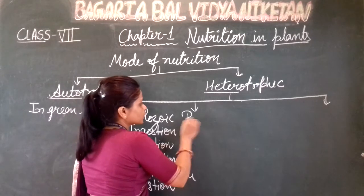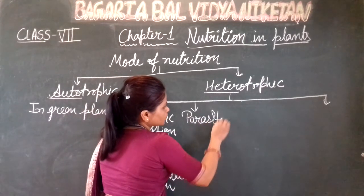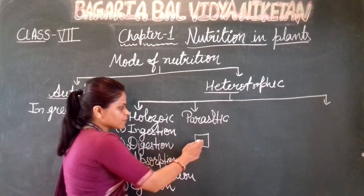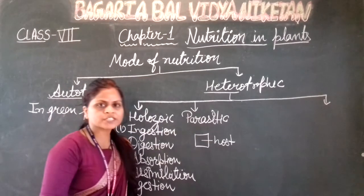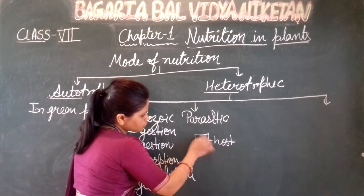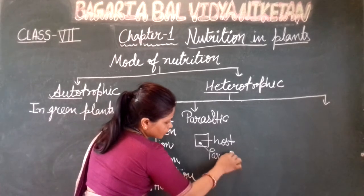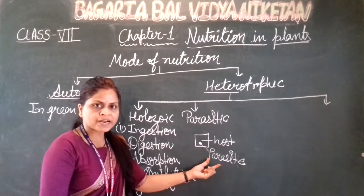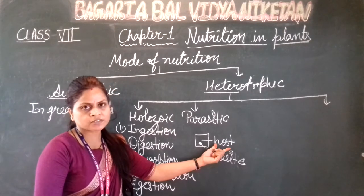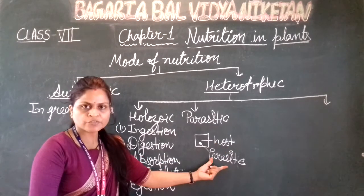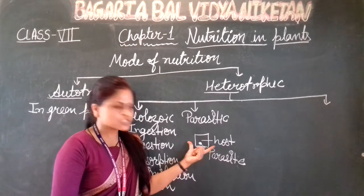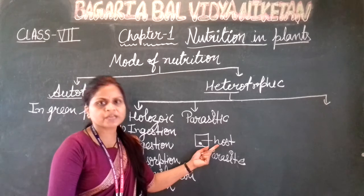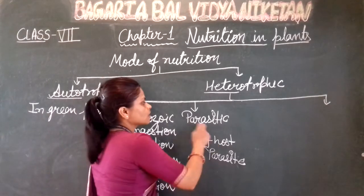The next is parasitic mode of nutrition. In this mode of nutrition, there is one host living being — host. And on the host's body, there is another living being called a parasite. Parasite is totally dependent on the host animal for its food. Parasite completely depends on the host and also directly or indirectly harms the host — नुक्सान भी पहुंचाता है। This is the parasitic mode of nutrition.